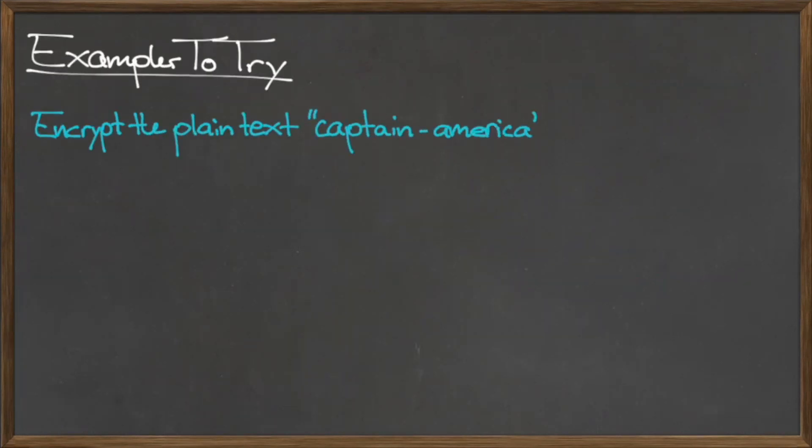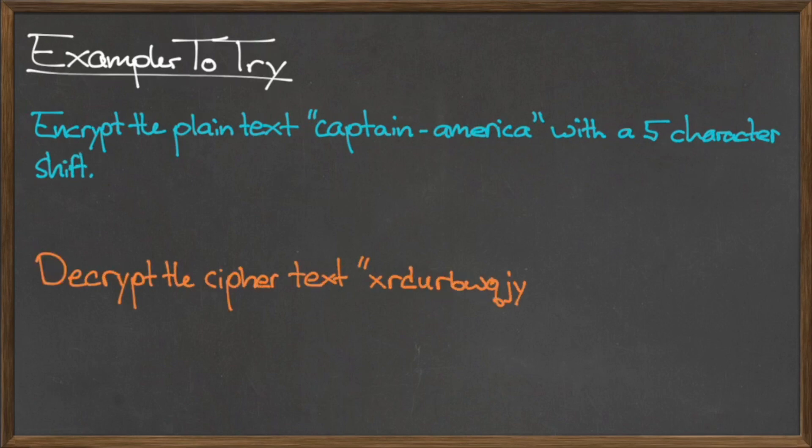Here are some examples for you to try on your own. Using a Caesar cipher with the given number of character shifts, encrypt and decrypt the following messages. If you're having trouble visualizing the encryption or decryption process, try making your own decoder disk.